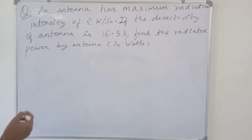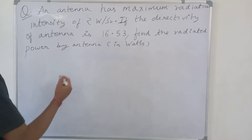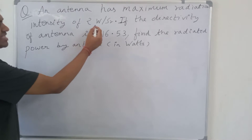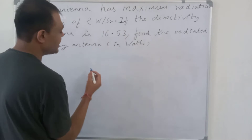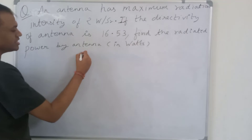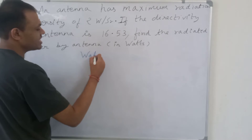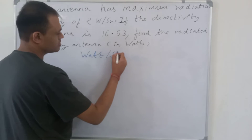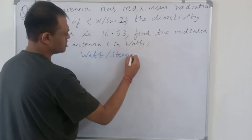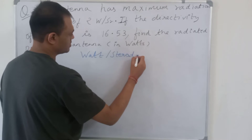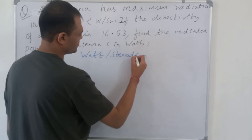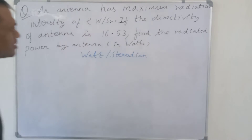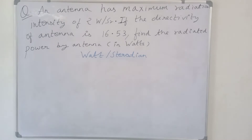In this question, we are given that the antenna has a maximum radiation intensity of 2 watts per steradian. This unit is watts per steradian.